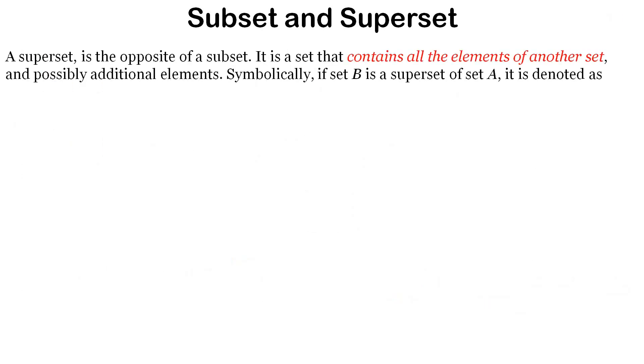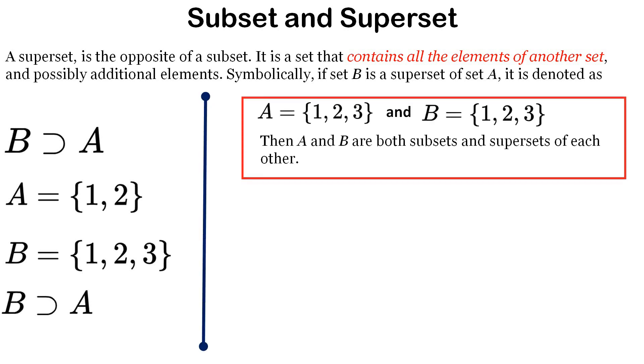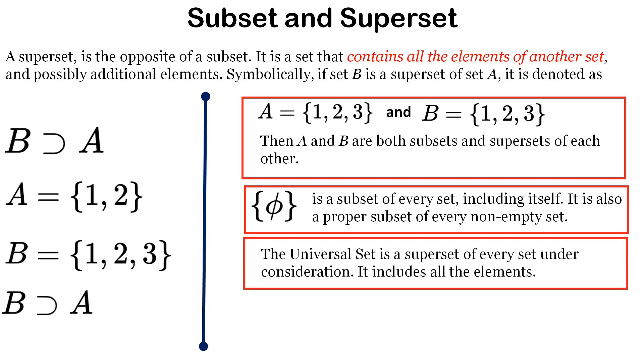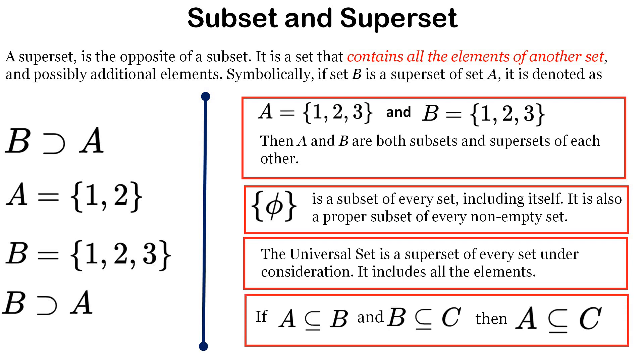A superset is the opposite of subset. It's a set that contains all elements of another set, possibly with additional elements. For example, if A = {1,2} and B = {1,2,3}, then B is a superset of A. Important properties: if A = {1,2,3} and B = {1,2,3}, then A and B are both subsets and supersets of each other. The null or empty set is a proper subset of every non-empty set. The universal set is a superset of every set under consideration.